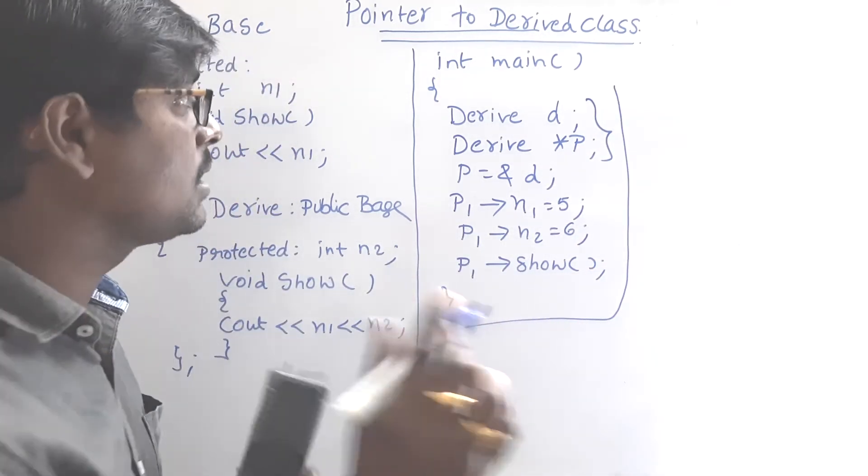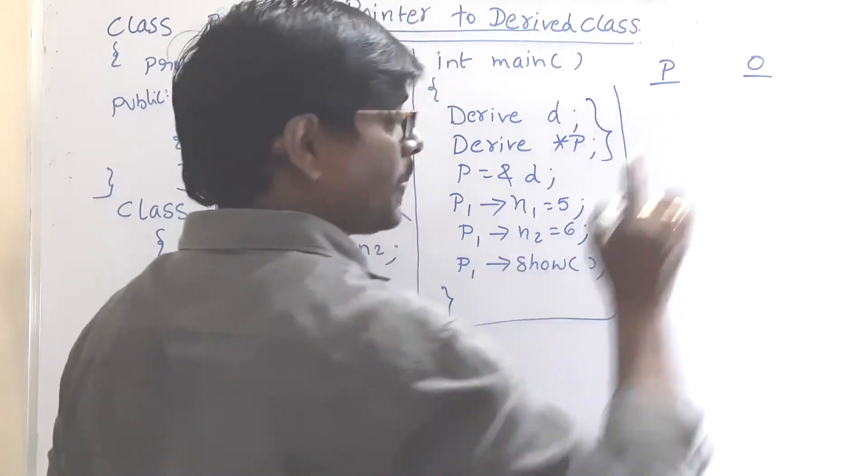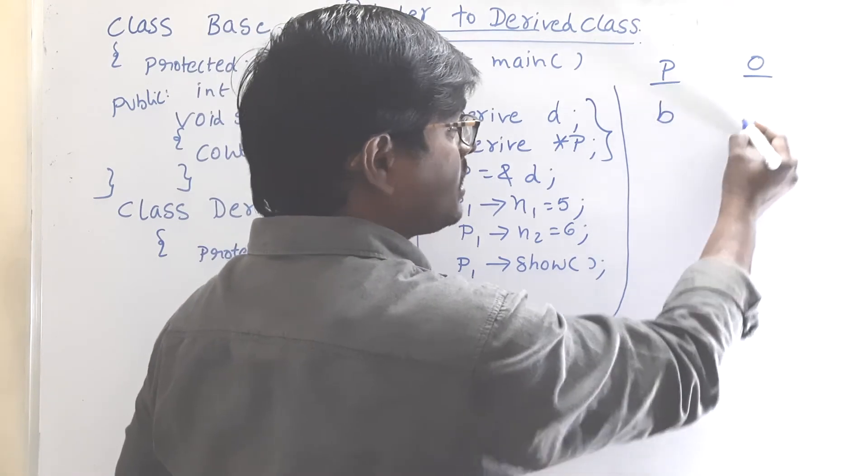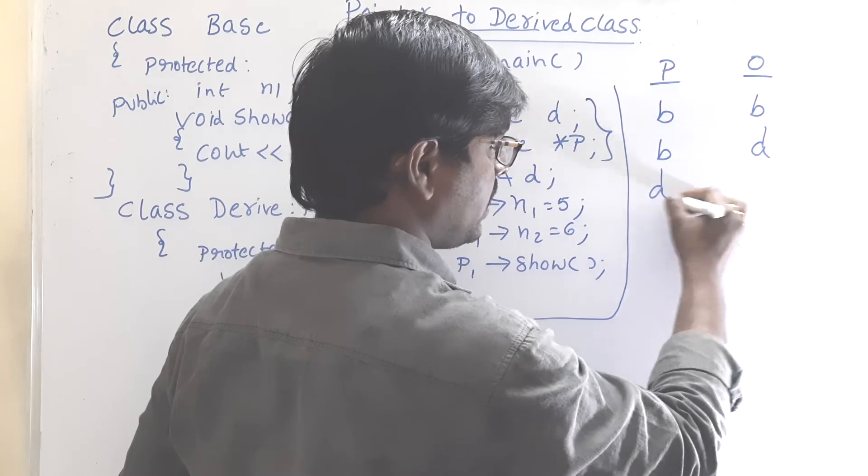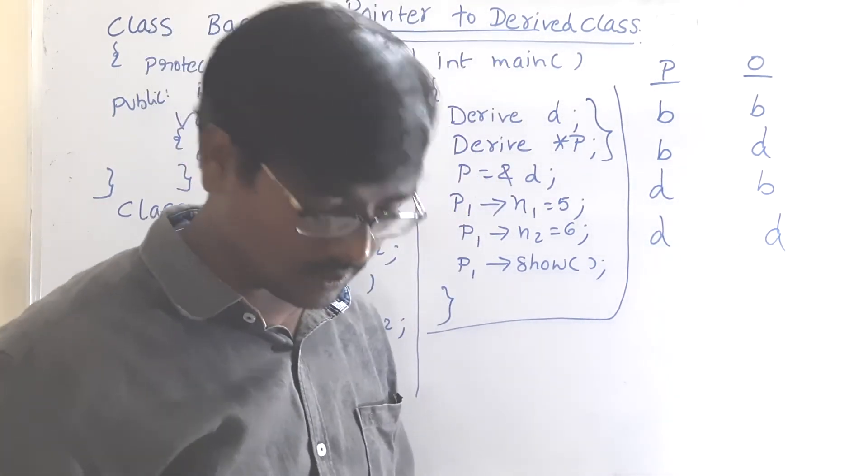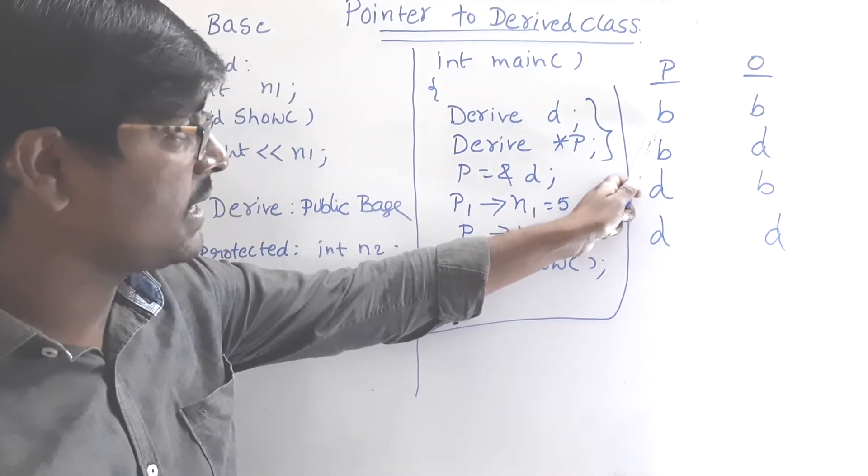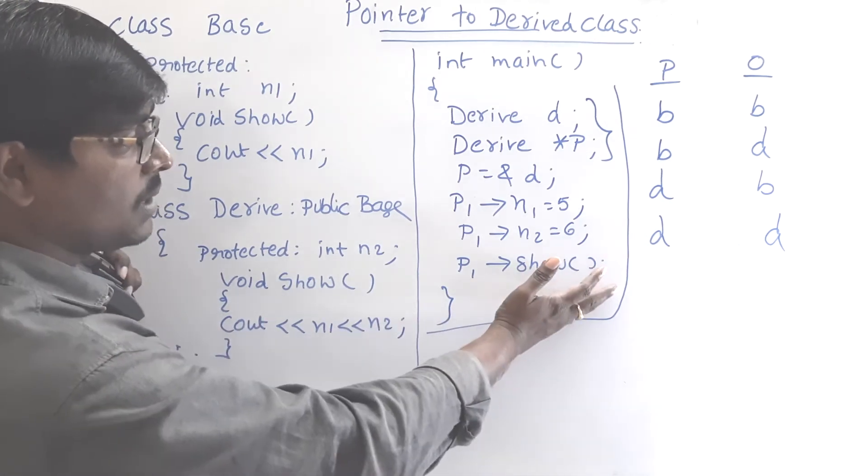We have pointer and object. What are the cases? Base class base class. Base class derived class. Derived base. Derived derived. These are the 4 cases. If a pointer is base class. This is completed. I am erasing this program.